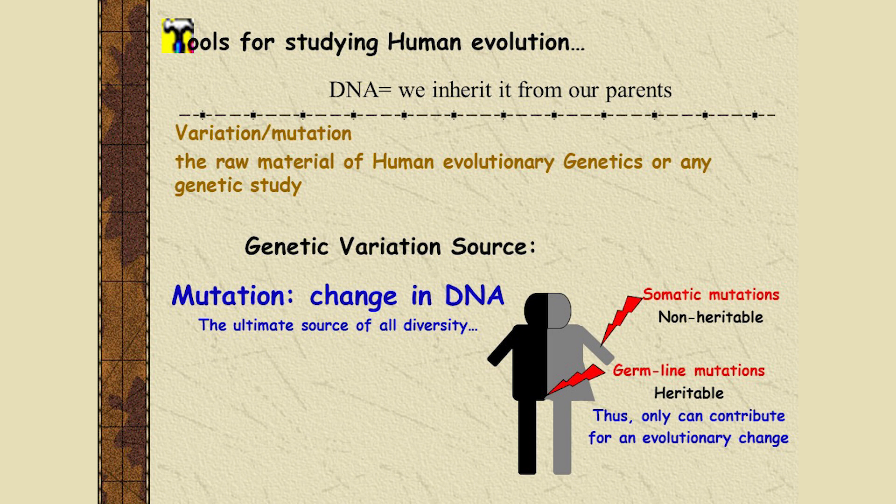DNA is the genetic material we inherit. There are two types of variations: somatic, meaning a DNA change restricted to that individual itself, and germline, meaning a change that gets inherited to the next generation. For this type of evolutionary study, we target germline variations, not somatic variations, because somatic variations are restricted to an individual.